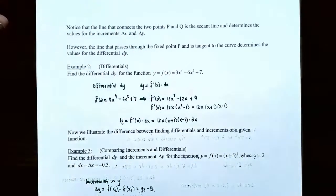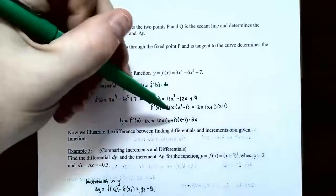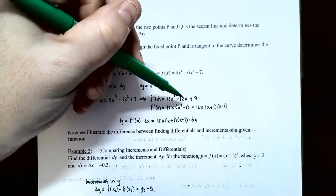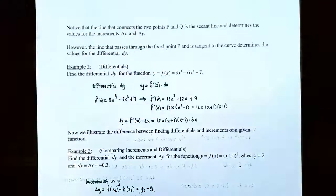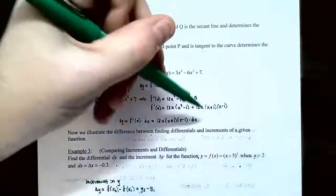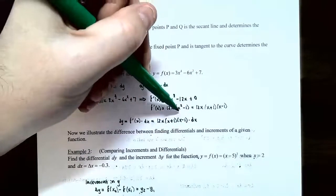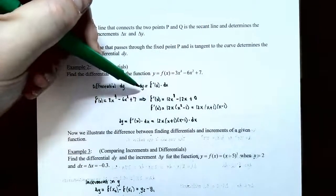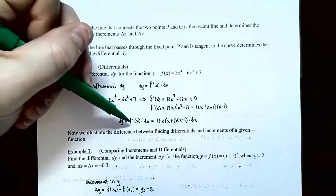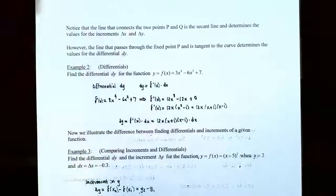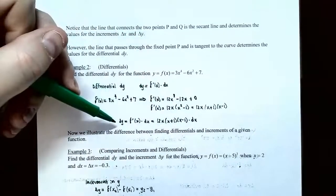Notice that each term has 12x in common, so you can factor it out. The derivative is 12x times (x squared minus 1). And x squared minus 1 is a difference of squares — it factors as (x plus 1)(x minus 1). So dy equals 12x times (x plus 1) times (x minus 1) times dx. That's how you calculate the differential: the derivative times dx.